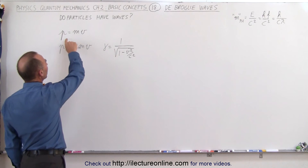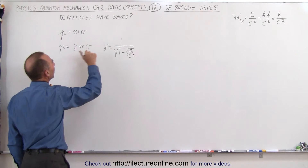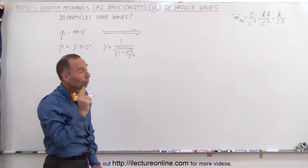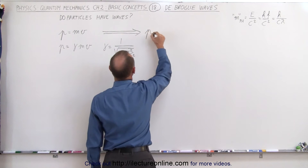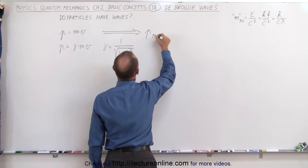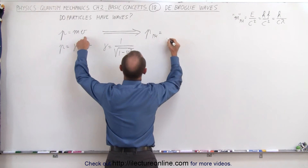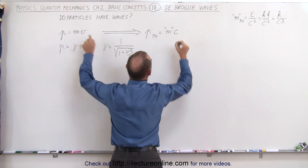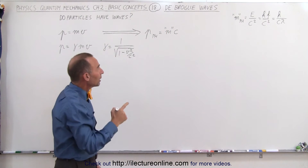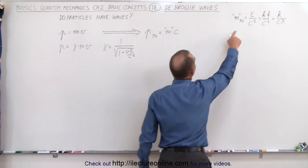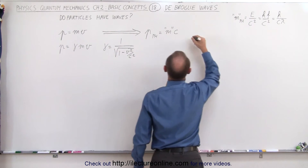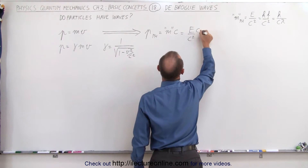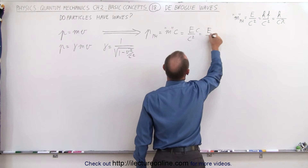Going back to the concept of momentum equals mass times velocity, let's see what that would mean for the momentum of a photon. The momentum of a photon would also have to be mass times its velocity — so that would be its apparent mass times its velocity, which would be the speed of light. And we already know from before that the apparent mass of a photon is E over c squared. So we can write this as E over c squared times c, which is equal to E over c.